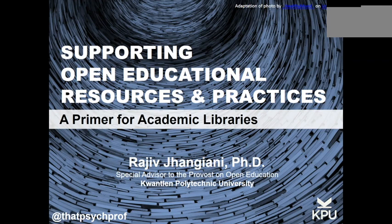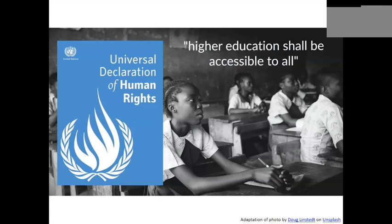If open education sounds like a radical idea, it really shouldn't. We are now at about the 40th anniversary of the signing of the Universal Declaration of Human Rights by the UN. Article 26 lays out language that everyone should have equal access to higher education. But as I'm sure you know, that's far from the truth — hundreds of millions of school-aged children are out of school, and higher education institutions across the world need to serve about a hundred million additional students over the next 10 years.